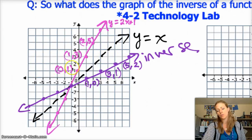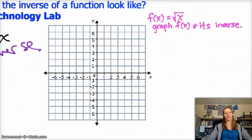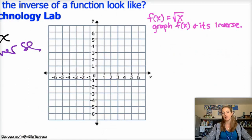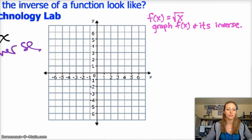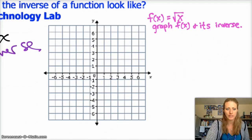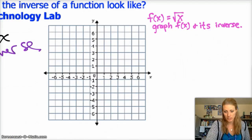So I'd like you to try this next problem. Graph f of x equals square root of x — a regular square root parent function. And then graph its inverse using the same reflecting over the line y equals x. Go ahead, try that, and check your answer.